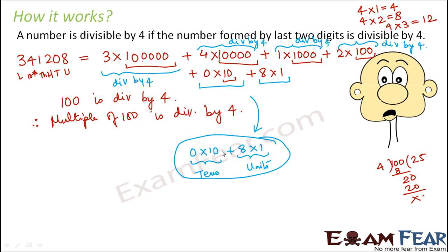Our doubt is only whether the last two digits are divisible by 4 or not, because the remaining digits are always divisible by 4. So the doubt lies only with the last two digits. And that is why we have made this rule like this.